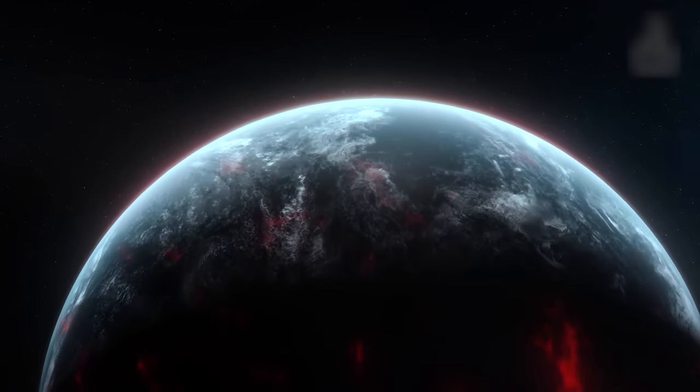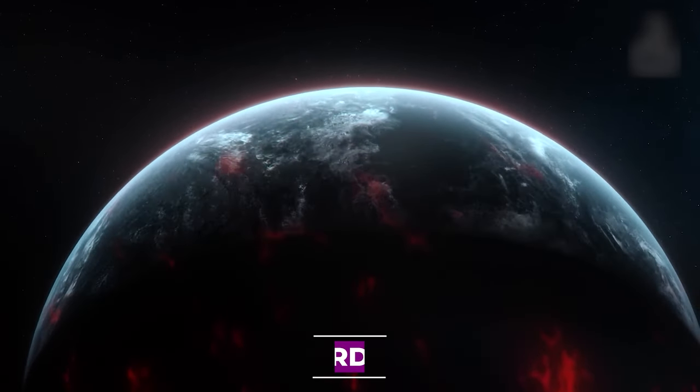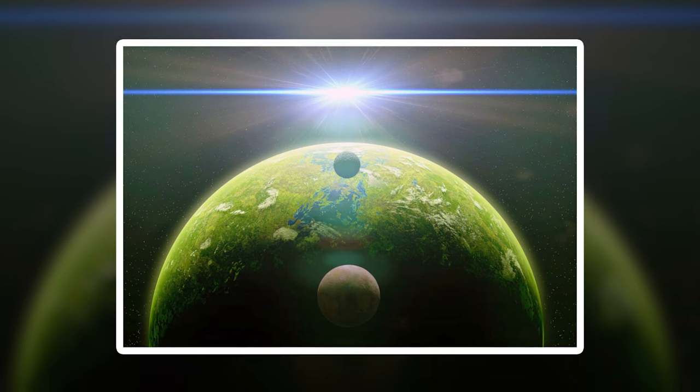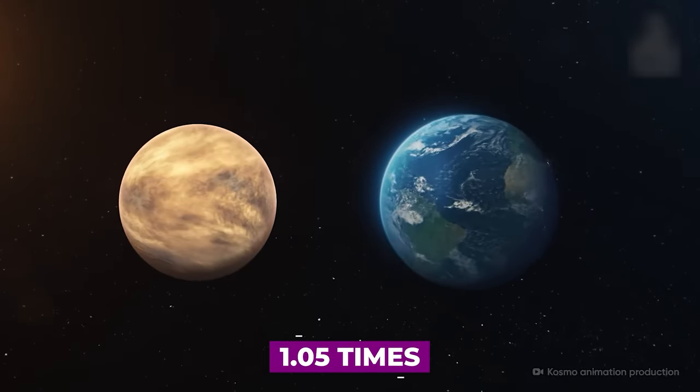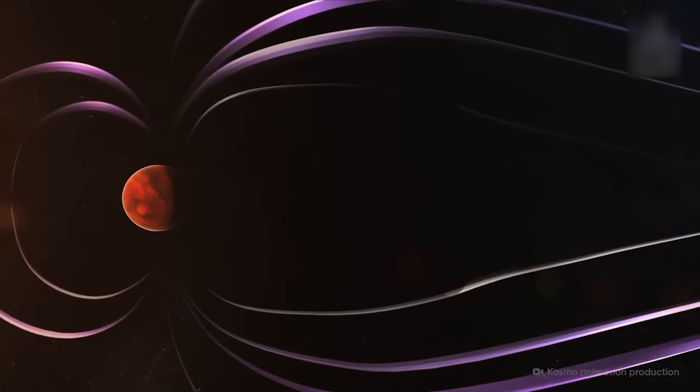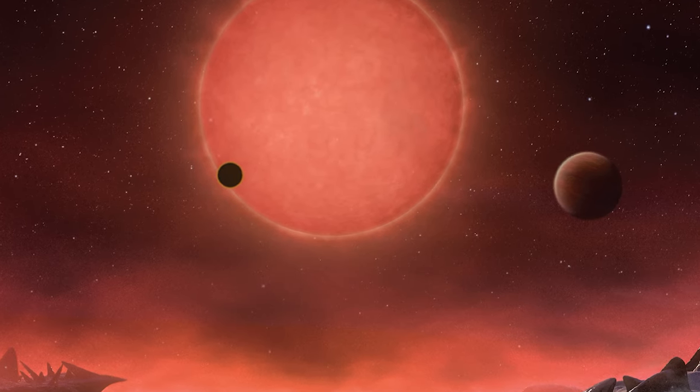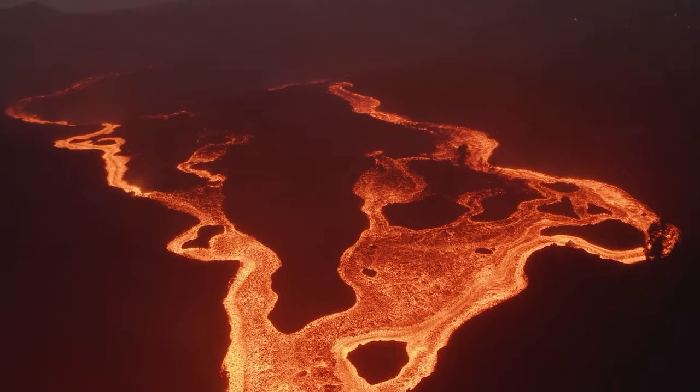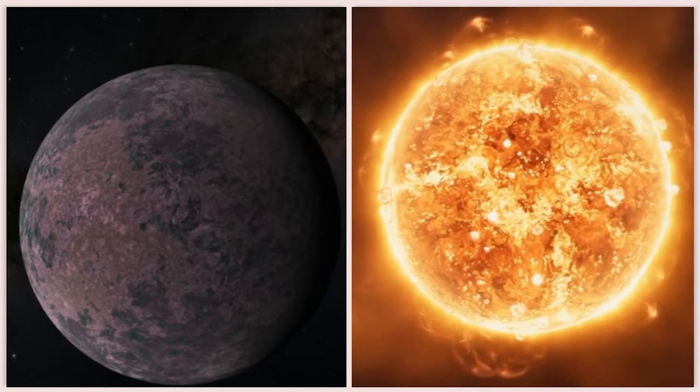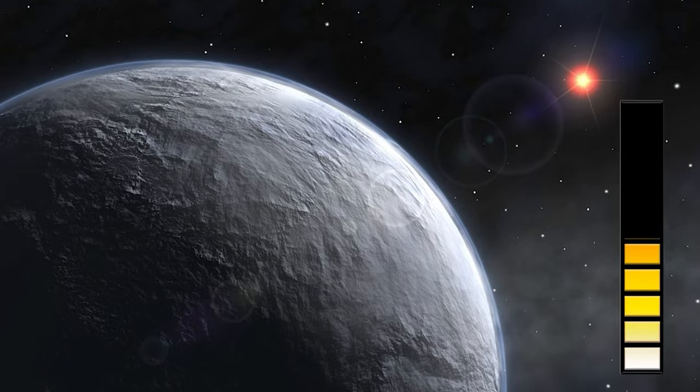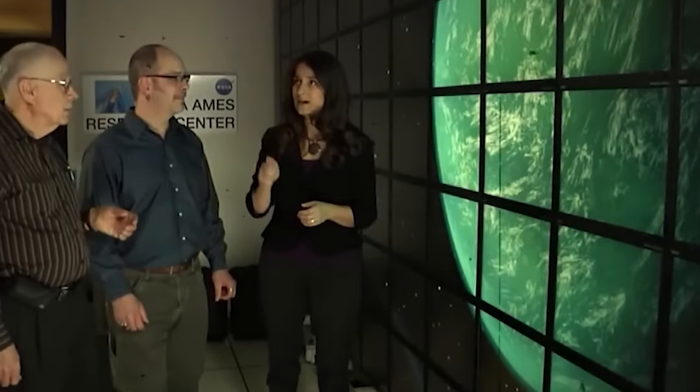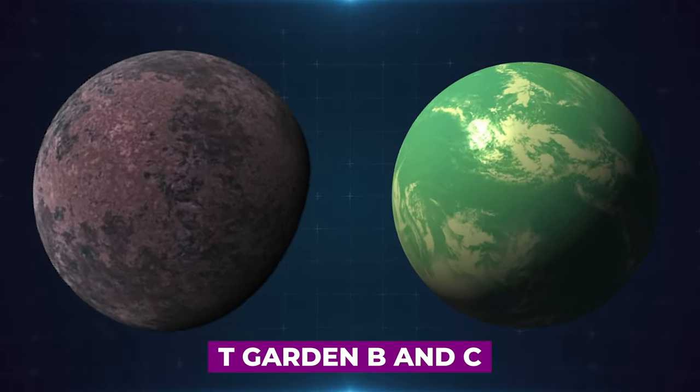One notable discovery is a planet called T-Garden b, found in 2019. Situated approximately 12.4 light-years away from Earth, it closely resembles our planet in terms of mass, weighing about 1.05 times the mass of Earth. T-Garden b orbits an M-type star, named T-Garden, which belongs to the category of red dwarf stars. These stars, known for their cooler temperatures, have surfaces measuring less than 3,600 Kelvin. The T-Garden star is about 10 times less massive than our Sun, with a temperature of approximately 2,700 degrees. Even though the red dwarf star appears cool, it still manages to warm up its two planets, T-Garden b and c.